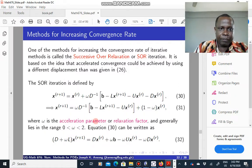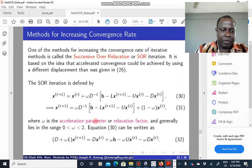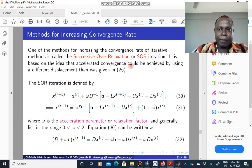So one of the methods used for increasing the convergence rate is the so-called successive over-relaxation or SOR iteration. So it's actually based on the idea that if you look at equation 26, which is repeated here without this omega term here.